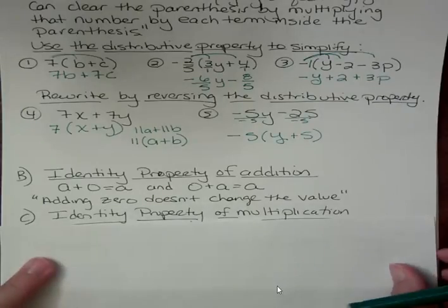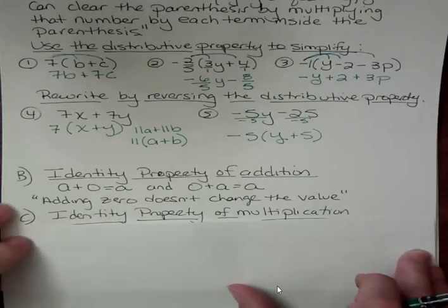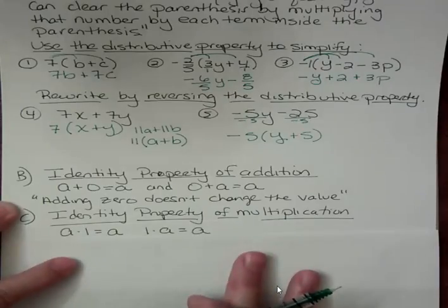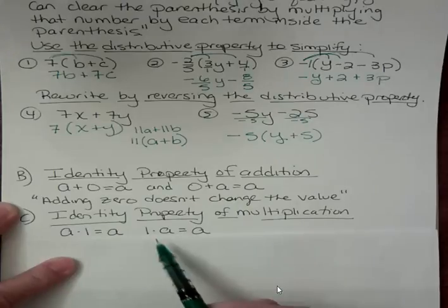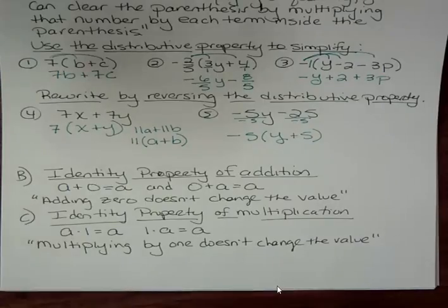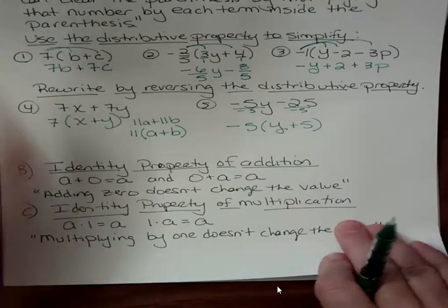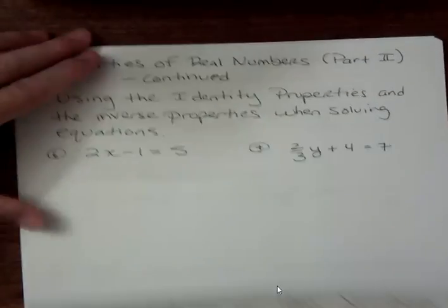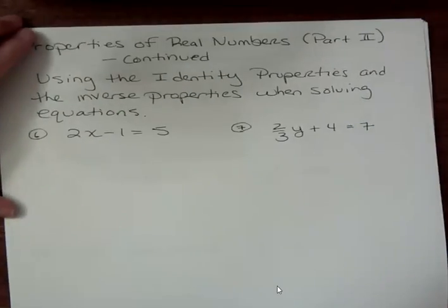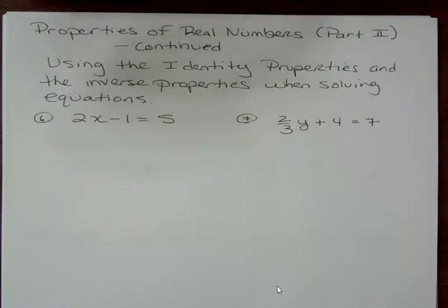The identity property of multiplication. What number would you multiply by if you didn't want to change the value? It would be not 0 because that would change it to 0. It would be 1 because a times 1 is a, and 1 times a is a. We've been seeing that all over the place when we solve equations. We don't want 1a because we don't need to. And so in words, multiplying by 1 doesn't change the value. So let's take a look at a couple of problems where we use that identity property.